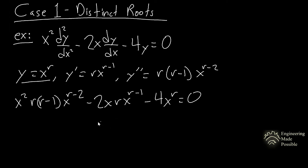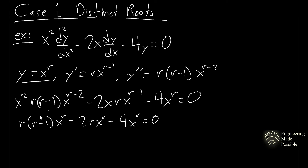Now simplify. When multiplying variables with exponents you add the exponents, so the twos cancel and the ones cancel, and you're left with x to the power of r throughout. This gives: r(r minus 1) times x to the r, minus 2r times x to the r, minus 4 times x to the r, equals zero.